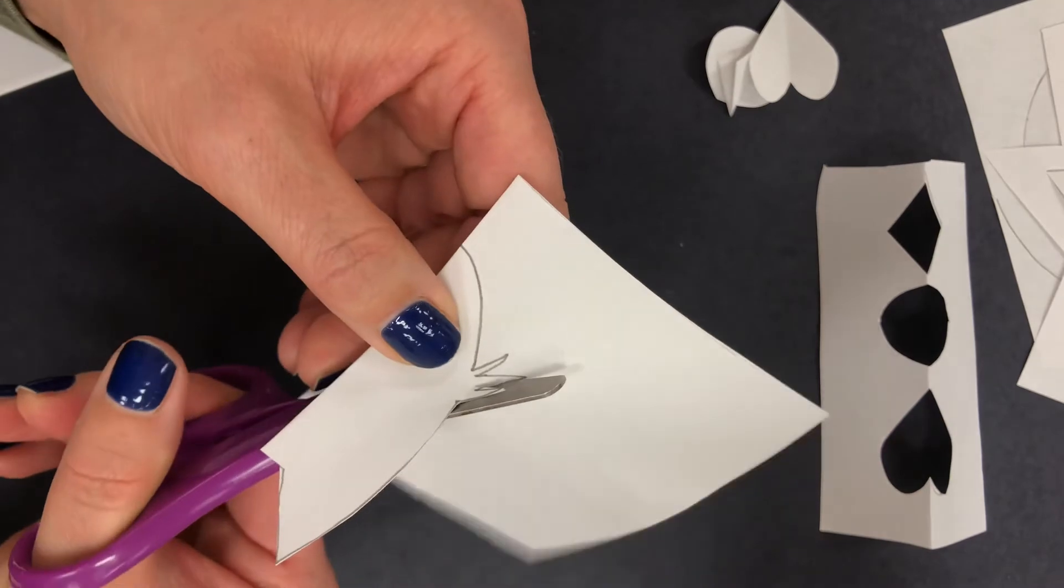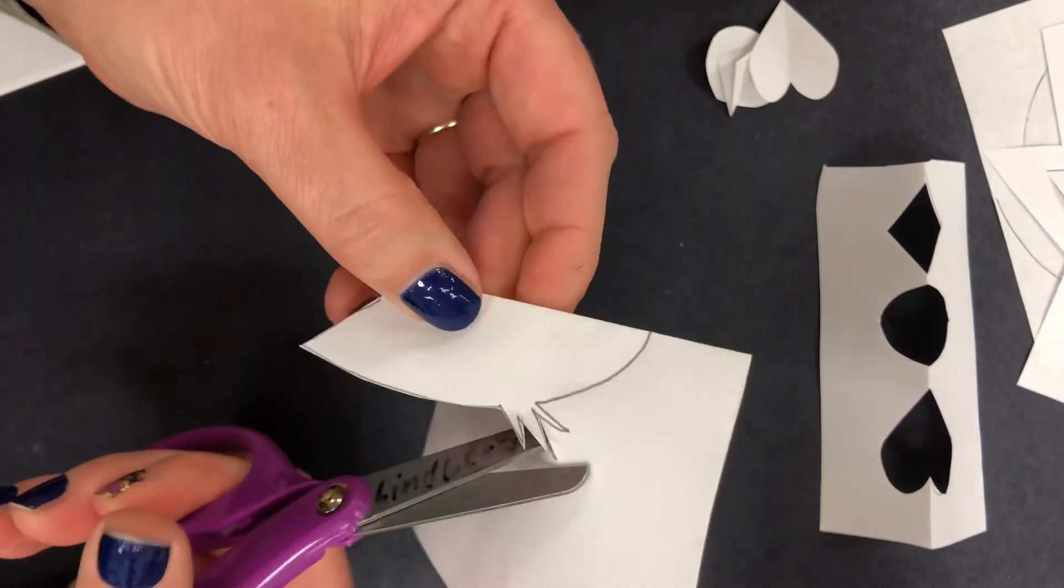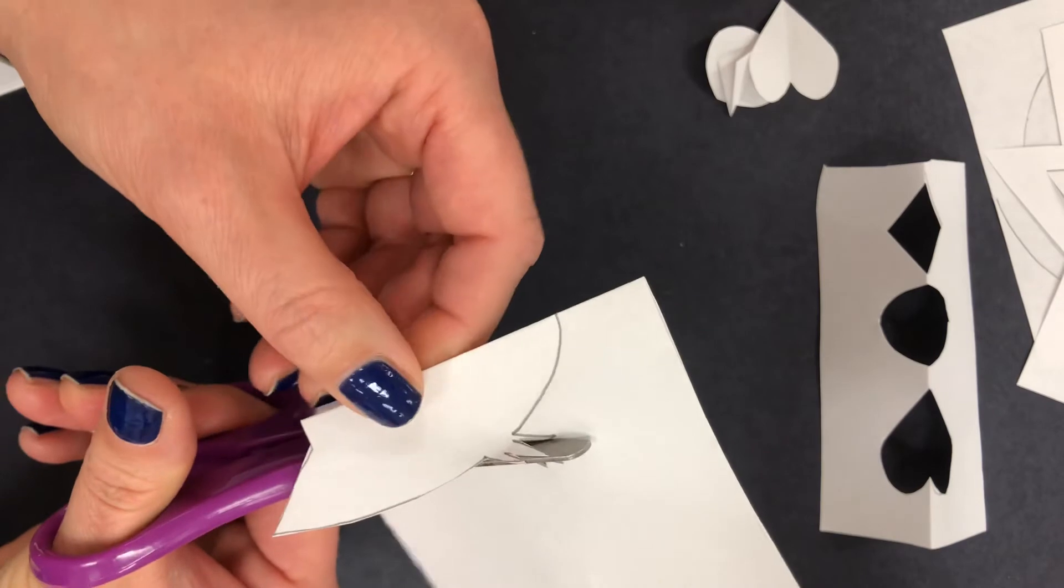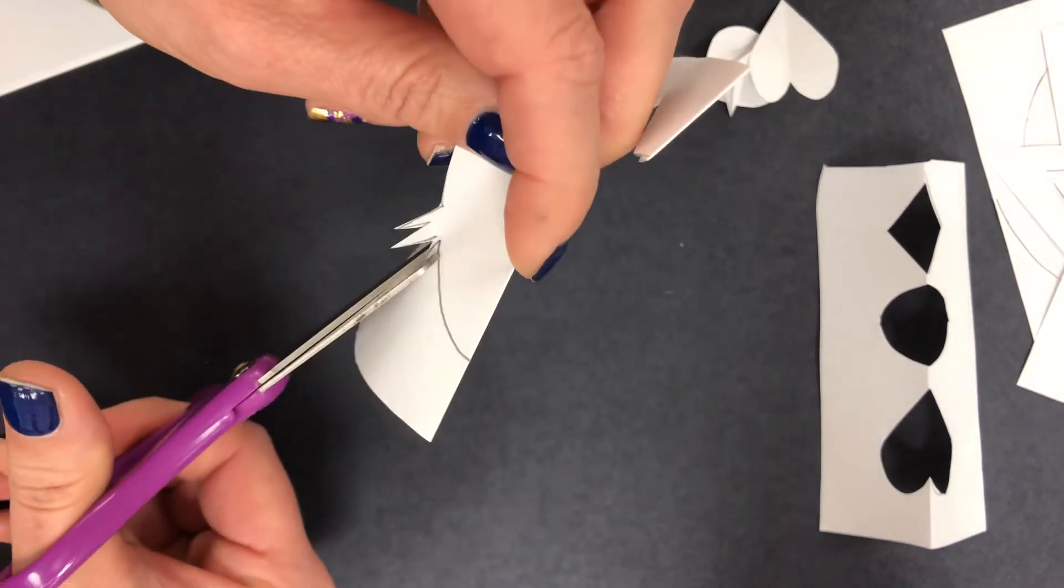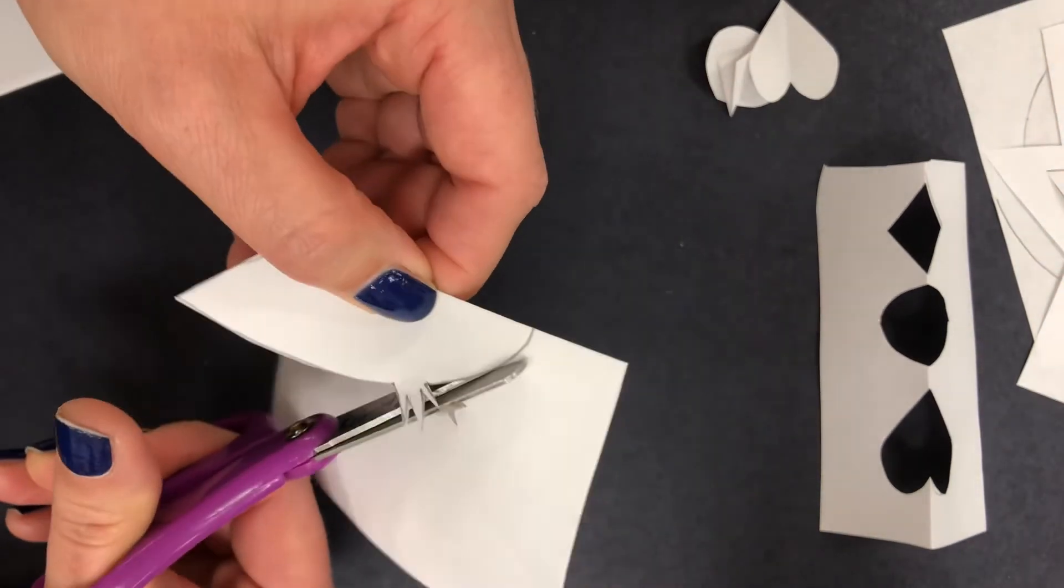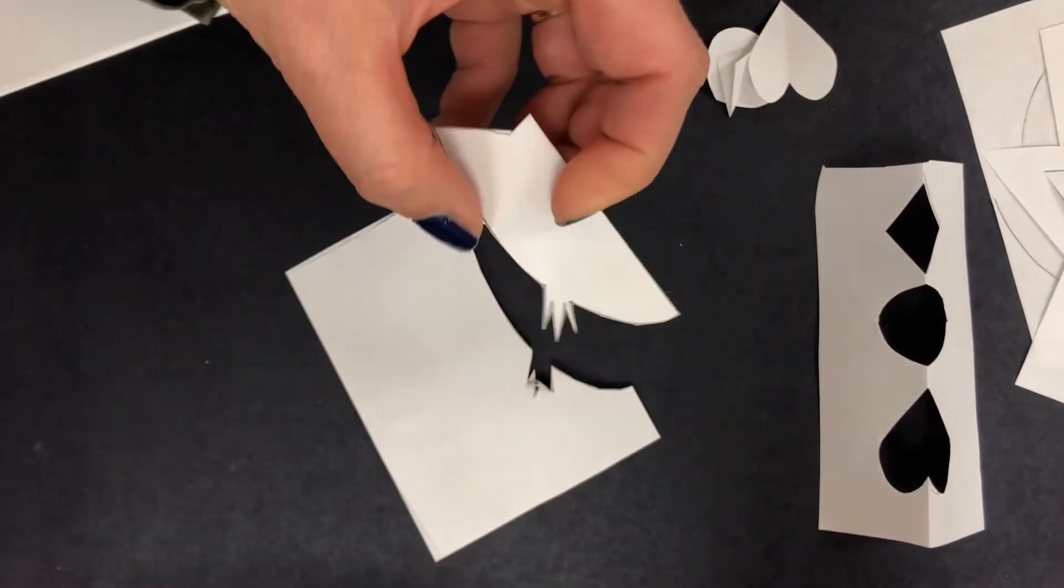And the kitty cat face, well that's just an example. You can really draw anything you want on the folded line and cut it out, so it could be something representative like an animal.